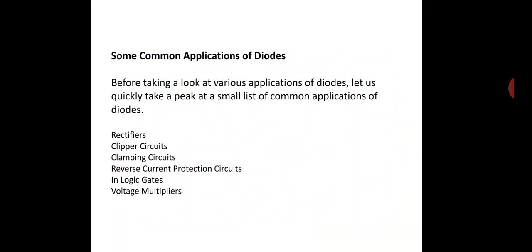Now, the uses of the diode. Where do we use the diode? In electronic circuits, like a rectifier, where we use conversion of AC voltage to DC voltage; clipping circuits, clamping circuits, protection circuits, logic gates, and voltage multipliers. We will discuss these circuits in detail in the next slide.